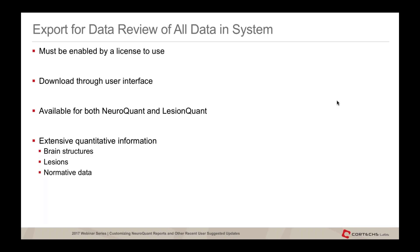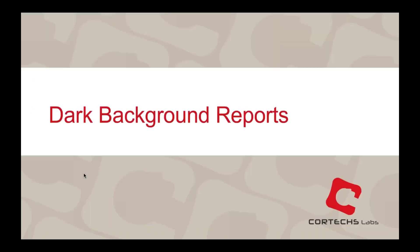The CSV file has been significantly expanded. It is enabled through a separate license, so if it is currently not available to you but you are interested, please reach out. It is downloaded through the interface via that icon, available for both NeuroQuant and LesionQuant, and includes extensive quantitative information for brain structures and lesions with their normative data.